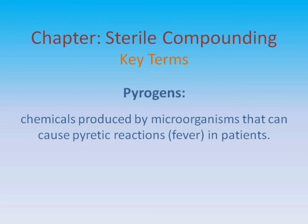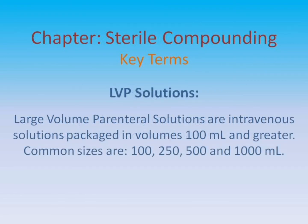Pyrogens: chemicals produced by microorganisms that can cause pyretic reactions or fever in patients. LVP solutions: large volume parenteral solutions are intravenous solutions packaged in volumes of 100 milliliters and greater. Common sizes are 100 milliliters, 250 milliliters, 500 milliliters, and 1000 milliliters.